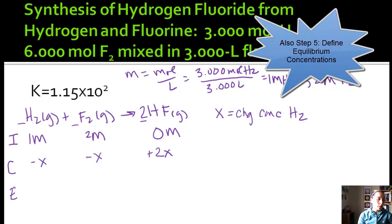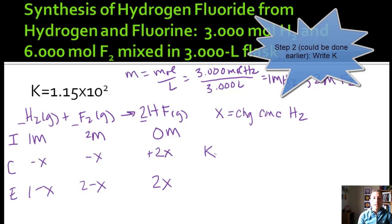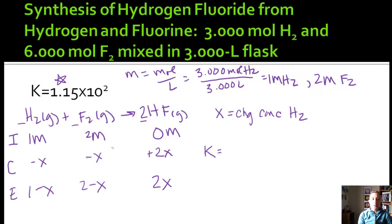So now we can write the equilibrium portion. And so we have 1 minus X, 2 minus X, and 0 plus 2X. So that just gives us 2X. So now we can substitute that into our K. Because we were also given the K value, so we're going to use that to help us solve this problem. Let's write our expression first. We're going to do products squared, because there's a 2, and then each of our reactants is 1 and 1.